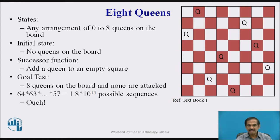The successor function adds a queen to an empty square, and the goal state is 8 queens on the board with none attacking another. This gives 64 × 63 × ... × 57 possible sequences for all 8 queens, which equals approximately 1.8 × 10^14 possible sequences, of which one or a few may be the goal states we want to achieve.